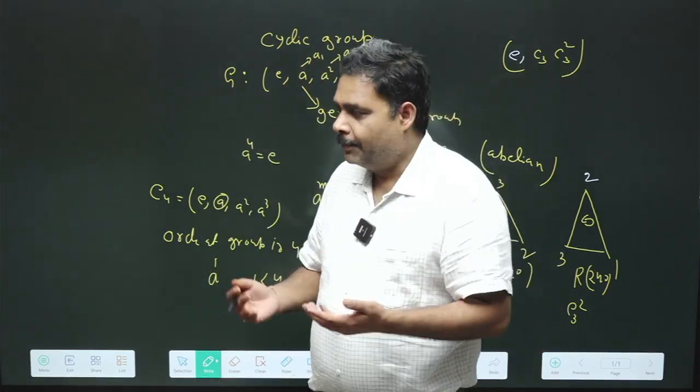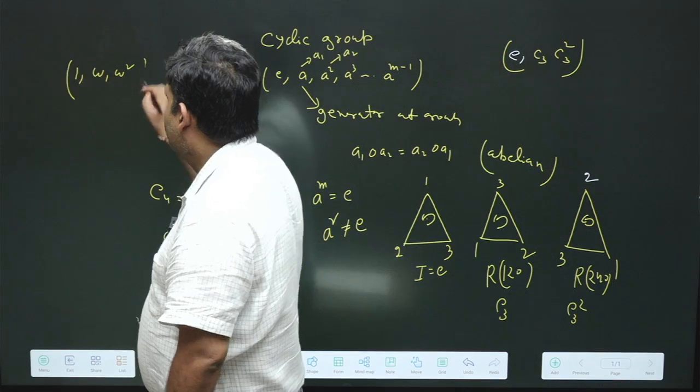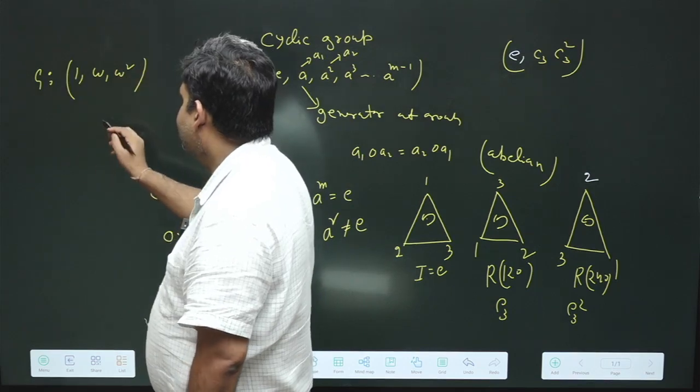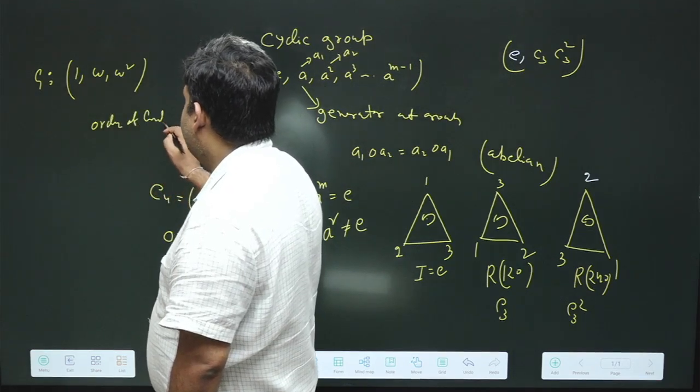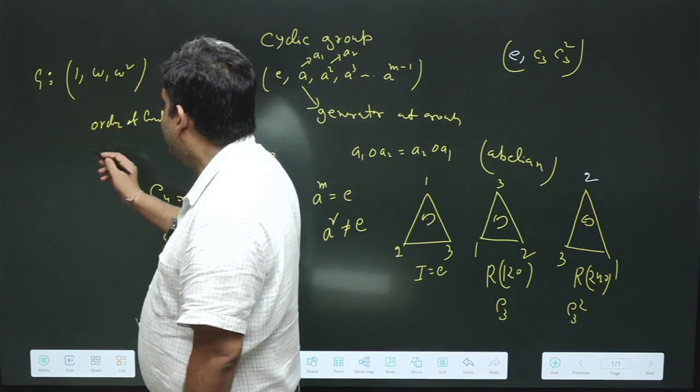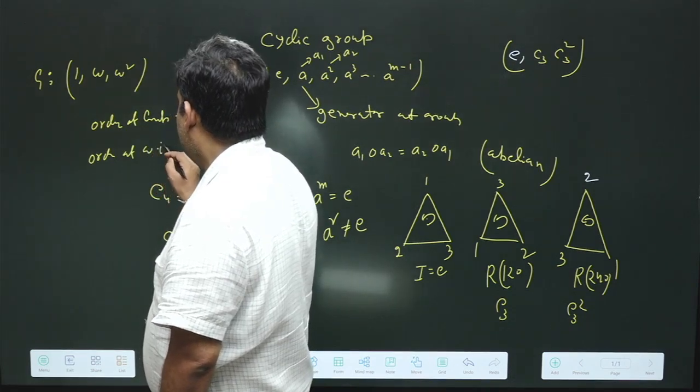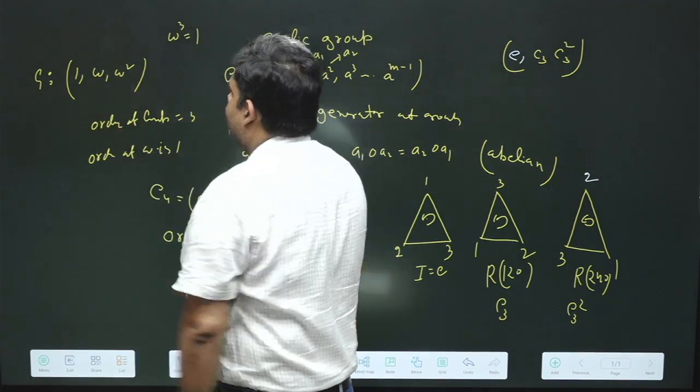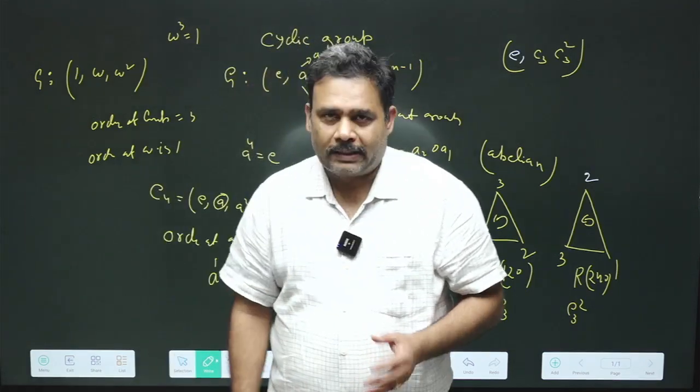Similarly, you can also have an example of cube root of unity. You have one, omega, omega square. Suppose this is your group. The order of the group is three because there are three elements. The order of omega is one because omega cube equals one and all others are less than this. So order of omega square is two. This is all about the properties of cyclic groups.